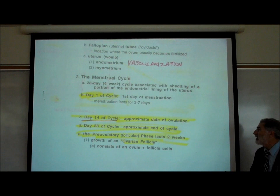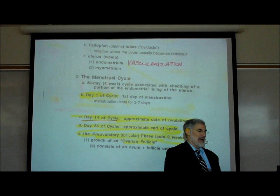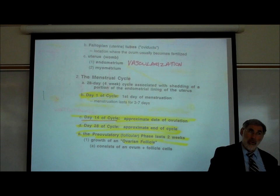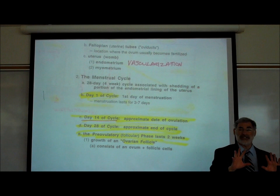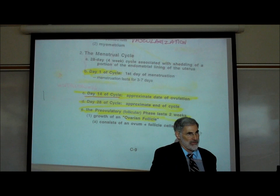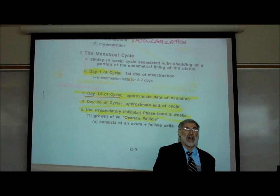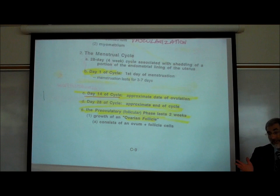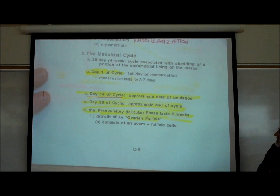More progesterone means more growth of vessels and a heavier shedding; less progesterone means lighter flow. If the cycle lasts 28 days, approximately halfway through — around day 14 — is the approximate date of ovulation. If a woman's cycle is 30 days, ovulation would be approximately day 15. Whatever the cycle length, half of that is the approximate date of ovulation, though it can be a little early or late.